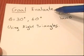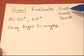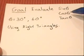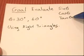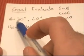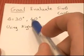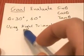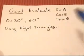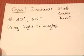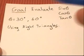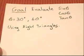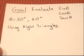We want to be able to evaluate sine theta, cosine theta, and tangent theta for theta equals 30 degrees and theta equals 60 degrees, using only right triangles. We're going to do this without a calculator and we're going to get exact answers, not decimal answers.